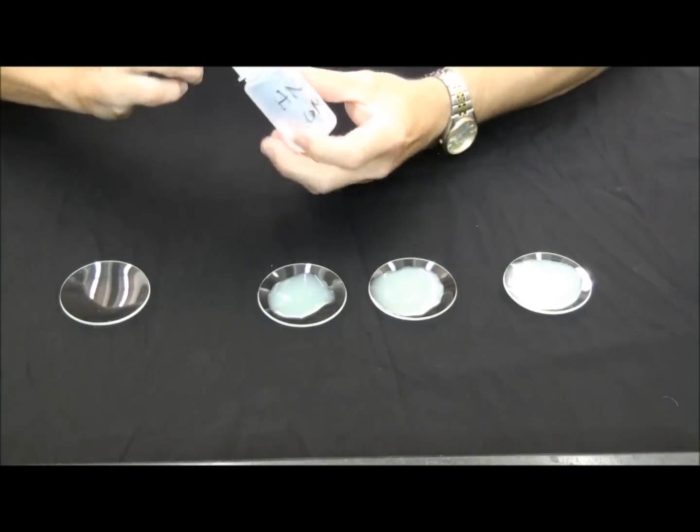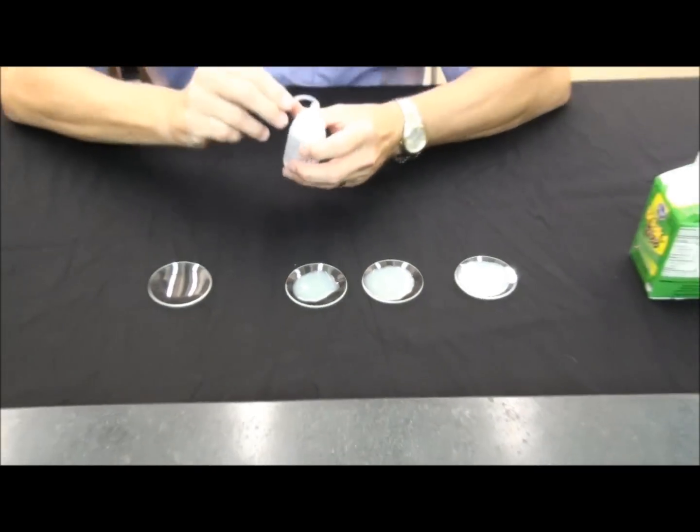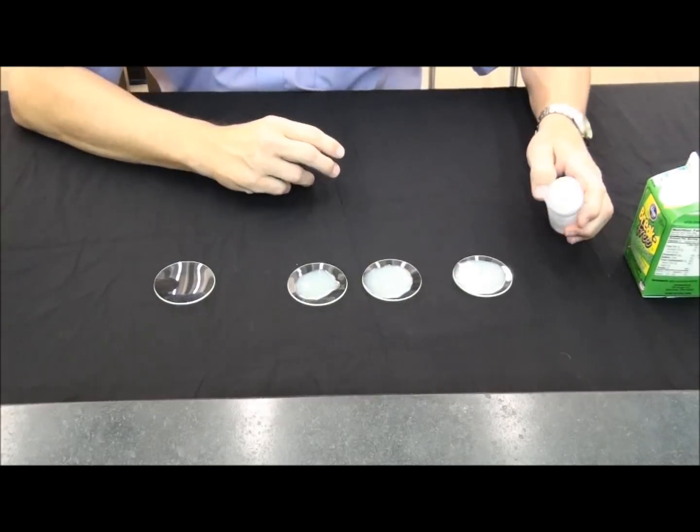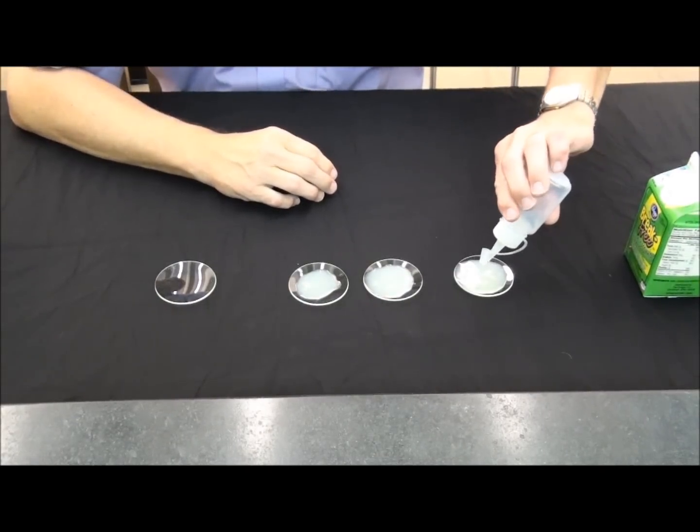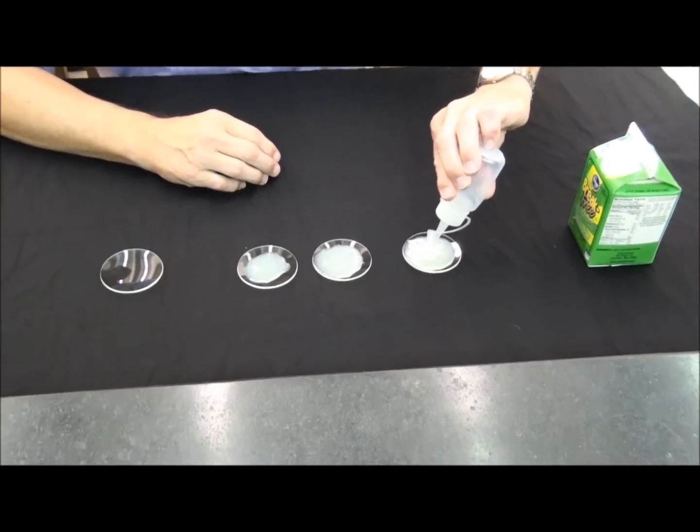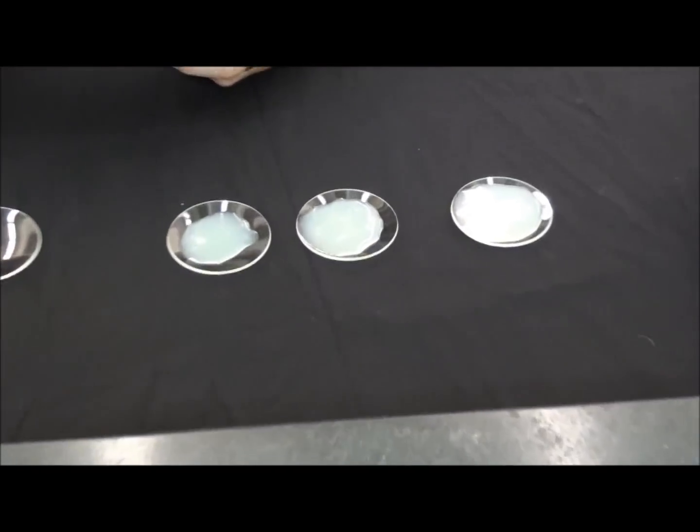If I add a drop of nitric acid, I lower the pH of the solution, and we will see the denatured casein immediately forming.